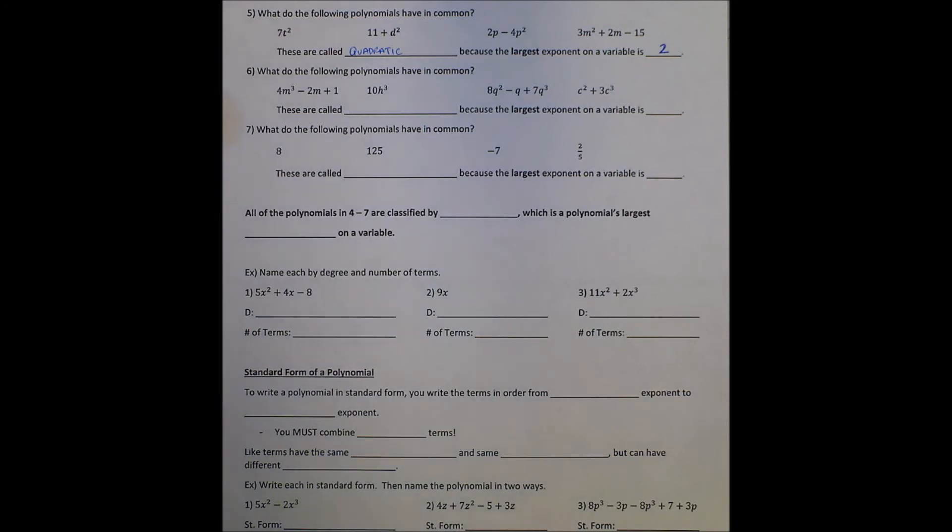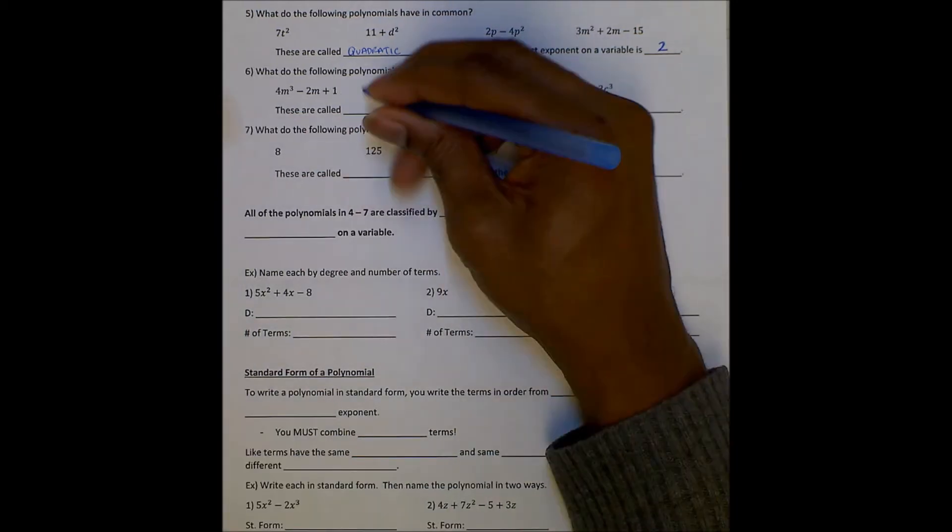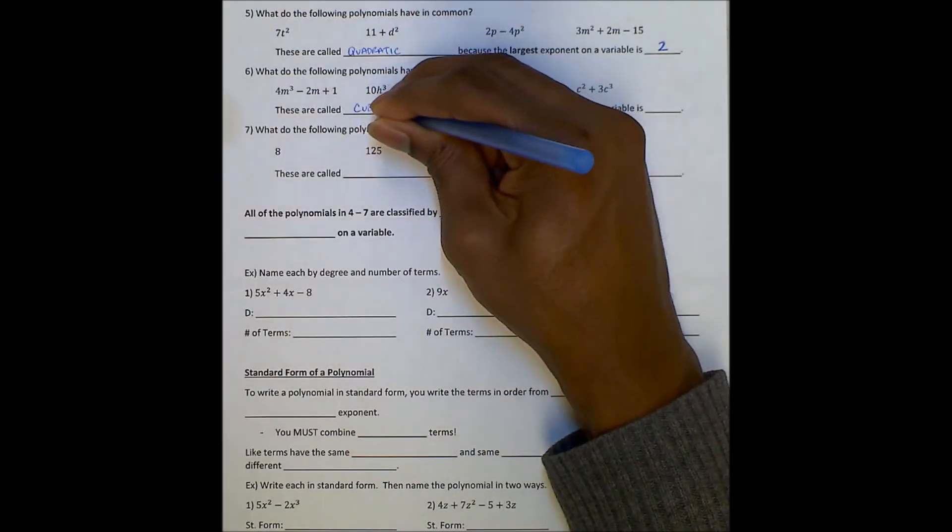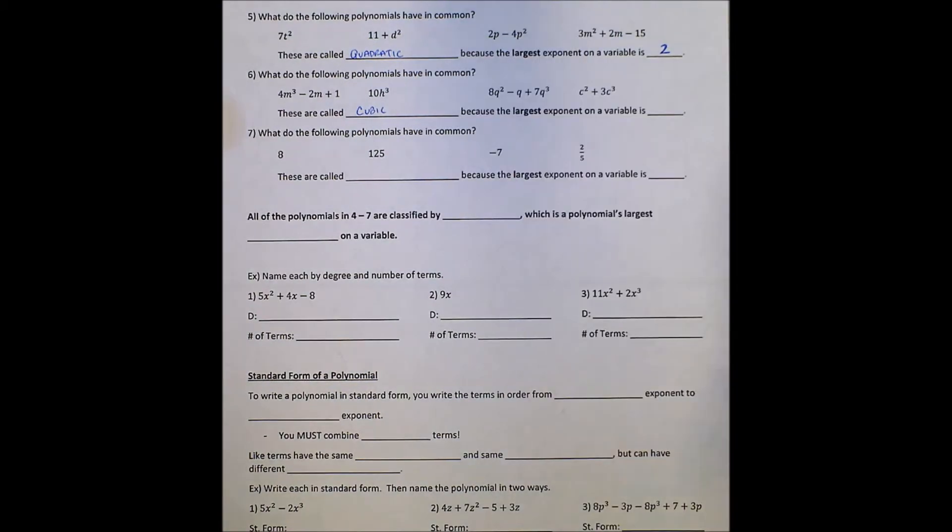What do these polynomials have in common? Well, again, you see some have three terms, some have two terms, some have one term, so that's not what's in common. We should see that the highest exponent is a square. So these are called quadratic because the largest exponent of the variable is 2, and it has to be on the variable.